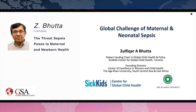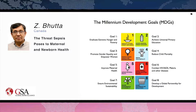Thank you very much for this opportunity. I'm going to give you a snapshot in the next 10-12 minutes of where maternal and newborn sepsis sit in the global equation, what we know about risk factors and epidemiology, some emerging challenges, and what can be done. Starting with a quick look at the Millennium Development Goals, which have now been replaced by the Sustainable Development Goals: the Millennium Goals had two major health goals — goal four of reducing child mortality by two-thirds by 2015, and maternal mortality by three-quarters by 2015.